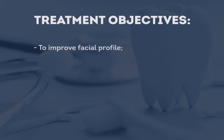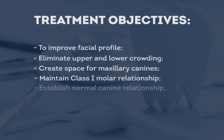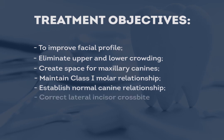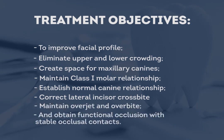There was a slight protrusion of the upper and lower lips and chin deficiencies. The treatment objectives were to improve facial profile, eliminate upper and lower crowding, create space for maxillary canines, maintain class 1 molar relationship, establish normal canine relationship, correct lateral incisor crossbite, maintain overjet and overbite, and obtain functional occlusion with stable pulpit contacts.